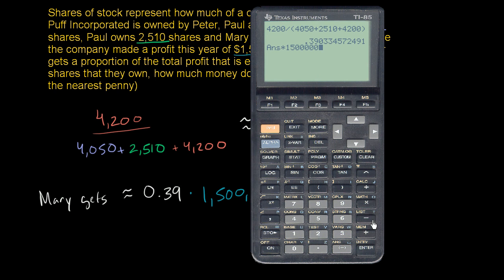Got to make sure I have the right number of zeros there. And that gets us $585,501. And we need to round to the nearest penny, 86 cents.